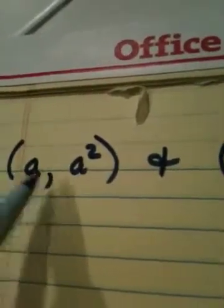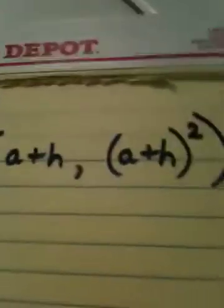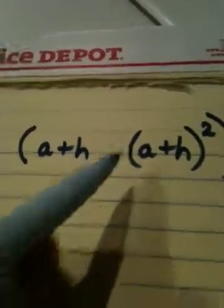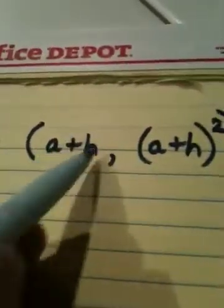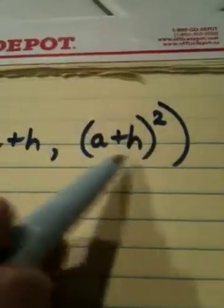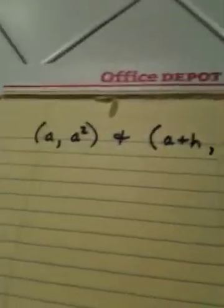Okay, this is the very last problem in section 13.14. We're given the ordered pair (a, a²), so this is an x value and this is a y value, and we're given the ordered pair (a+h, (a+h)²). This whole thing is one x value and this is the y value, and we're asked to find the slope of the line through these two points.